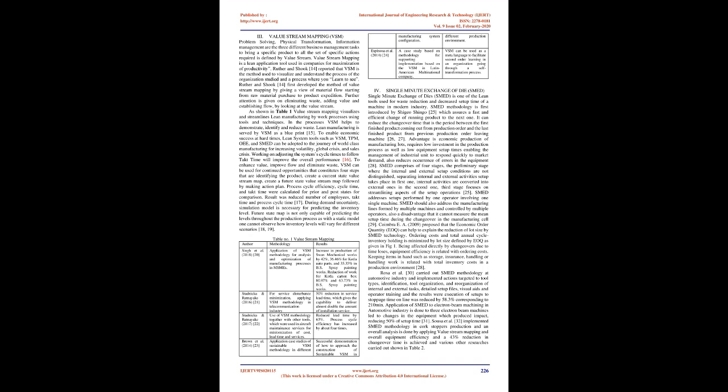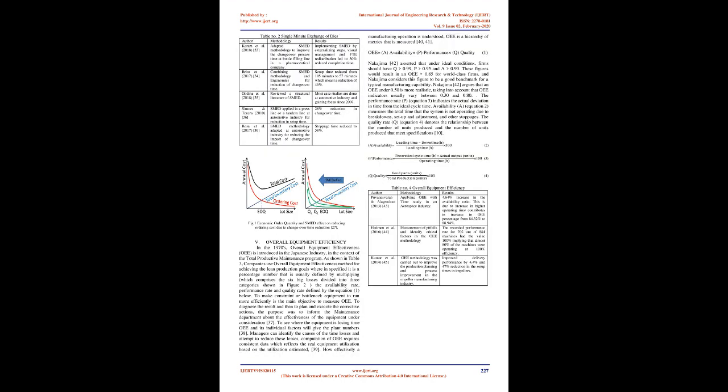A future state map is not capable of predicting inventory levels throughout the production process, as with a static model one cannot observe how inventory levels vary for different scenarios. Singh et al. 2018: application of VSM methodology for analysis and optimization of manufacturing processes in MSMEs resulted in an increase in production of Swan Mechanical Works by 42 percent, 36.46 percent for Kotla Auto Parts, and 35.35 percent in BS Spray Painting Works. Reduction of work for Kotla Carton Box by 80.97 percent and 63.73 percent in BS Spray Painting Works.